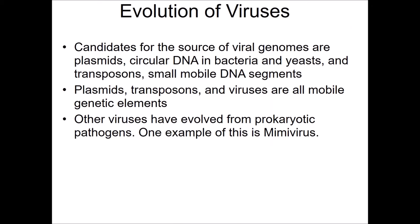Where viruses came from can be all over the place — we actually think that viruses have multiple origins of evolution. Candidates for the source of viral genomes include plasmids, which are circular DNA in bacteria and yeasts, as well as transposons, which are small mobile DNA segments. Other viruses have evolved from prokaryotic pathogens — for example, mimivirus.